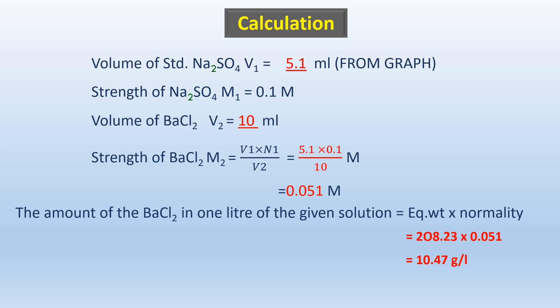For the calculation: the volume of sodium sulphate from the graph is 5.1 ml. The strength of sodium sulphate is 0.1 molar as given, and the volume of barium chloride is 10 ml. Using V₁N₁ = V₂N₂, the strength of barium chloride is 0.051. The equivalent weight is 208, so the amount is 10.47 grams per liter of barium chloride.